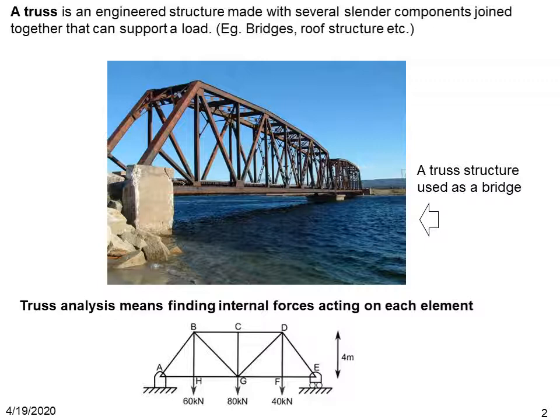A typical schematic of a truss structure is shown in this figure, which shows different elements such as AB, BC, CD, etc. It also shows the external load acting on the structure and the support reactions. In this case, the structure is supported at two points, A and E. Truss analysis of this structure means finding the force in each element: AB, BC, CD, etc.